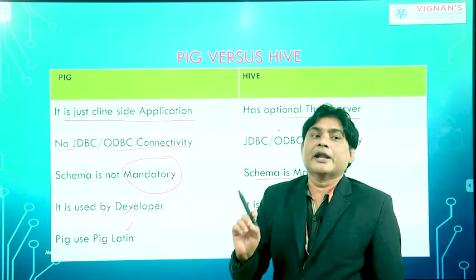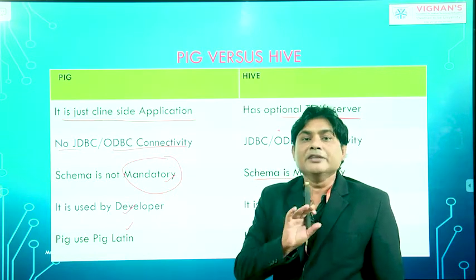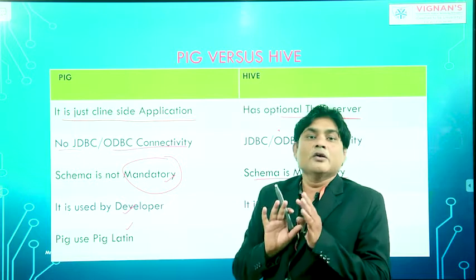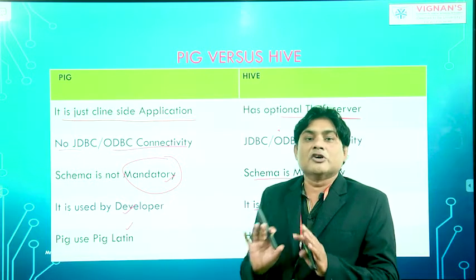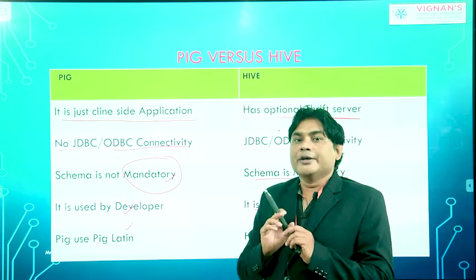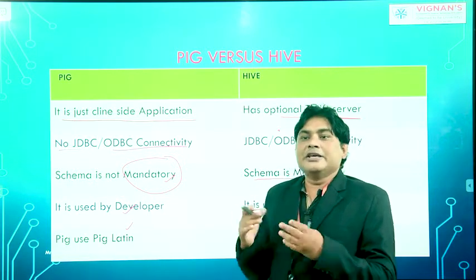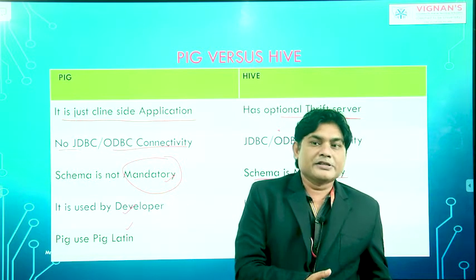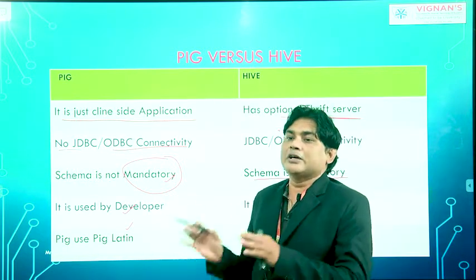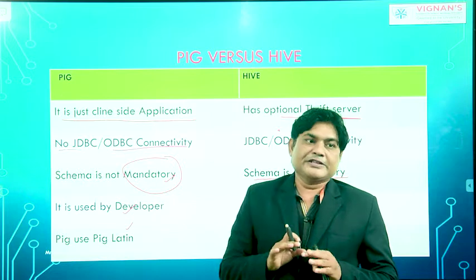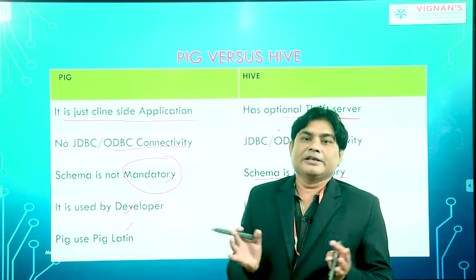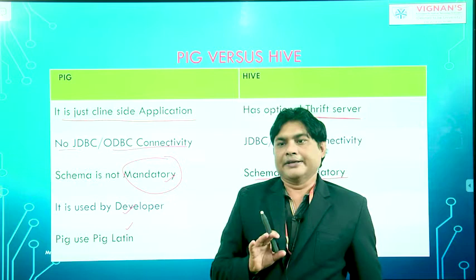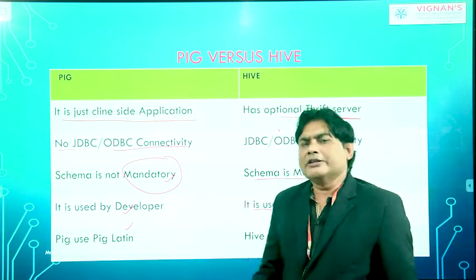Hive needs metadata whereas Pig doesn't require any metadata. Pig can work without metadata because Pig just gets data from HDFS, processes it, and stores the result back to HDFS. There is no storage schema in the case of Pig.